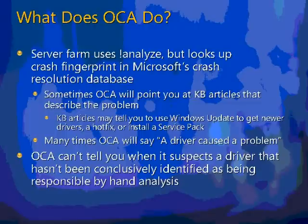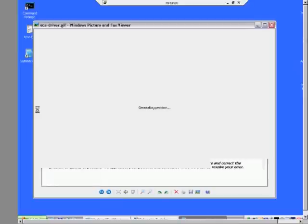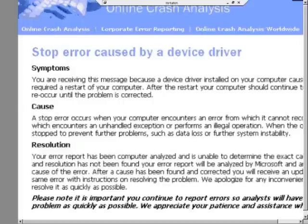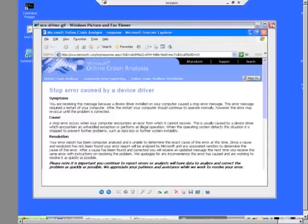The disadvantage is that if OCA does the lookup and there's no entry in the database, it can't tell you anything. Underneath the hood, the analysis engine almost always comes up with a suspicion — it might think it's a particular video driver — but if there's no database entry it just says, sorry, a device driver caused a crash, have a nice day. The reason OCA can't name a suspected driver is legal: the suspected vendor's lawyers would be calling immediately to complain about their name being smeared in front of customers. So OCA is forced to only tell you about things that a human has actually reviewed.